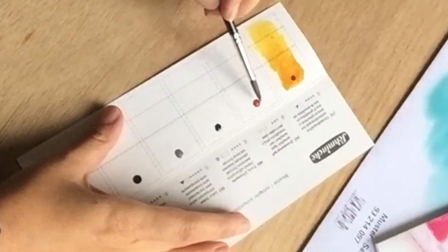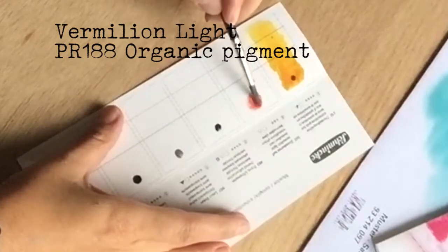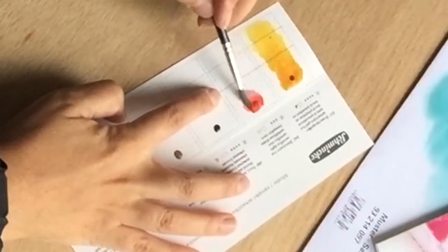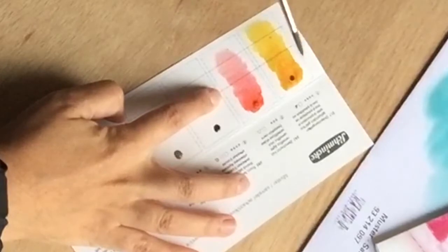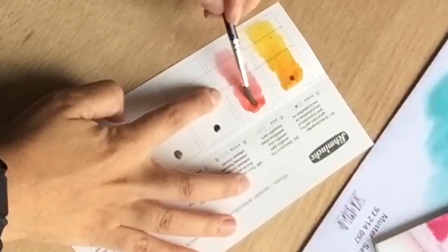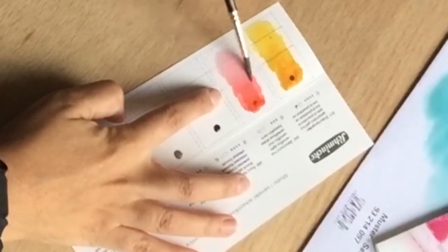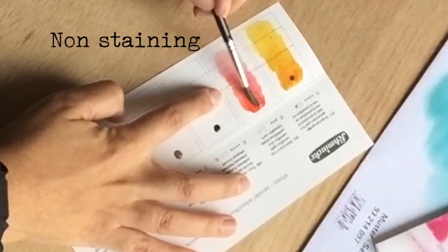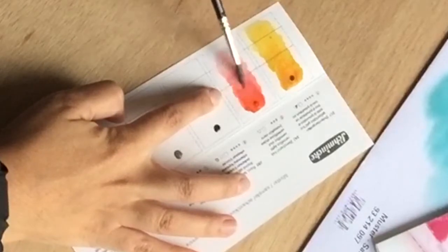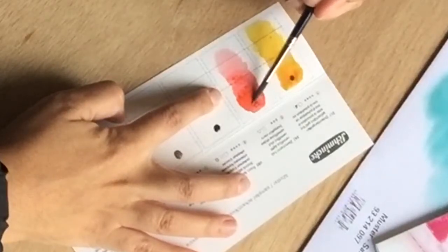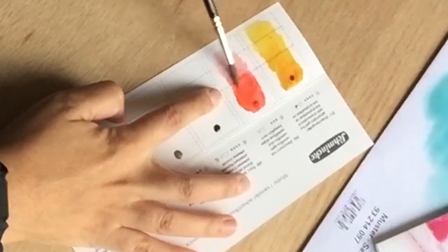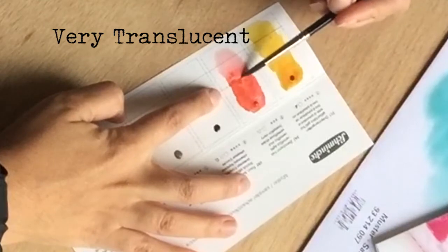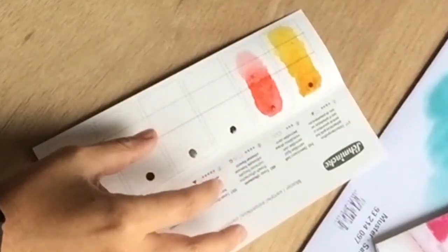This is Vermilion Light. It's super transparent. That's so nice to paint flowers.